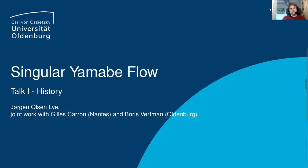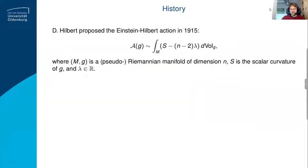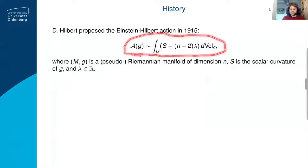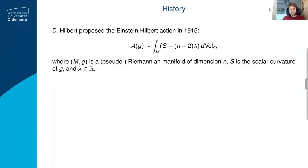Let's dive right in and start with the history. The Yamabe problem goes back to Hilbert's search for Einstein metrics. Hilbert wrote down the following action for a Riemannian manifold: you have a Riemannian manifold M, dimension N will be constant throughout the talk, S is the scalar curvature of G. Then you fix some lambda — you can think of that as a Lagrange multiplier.